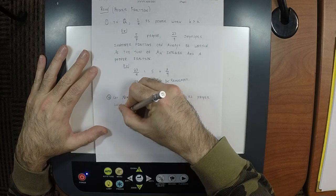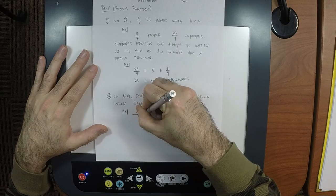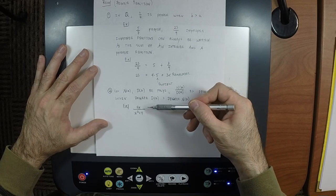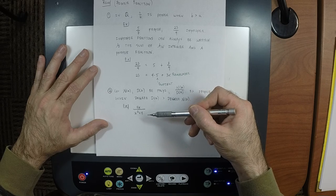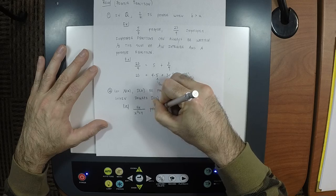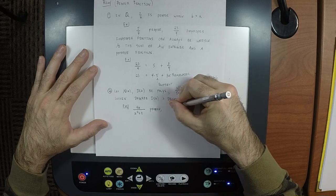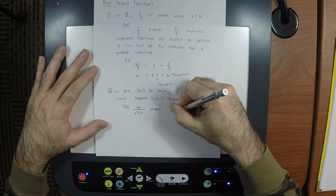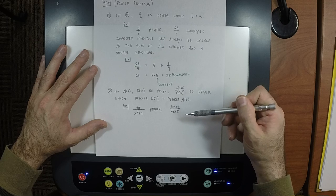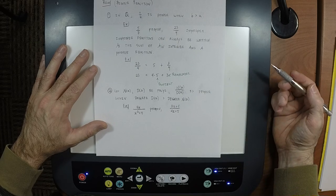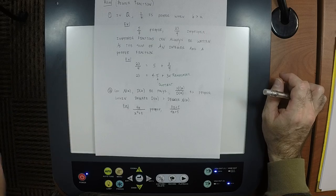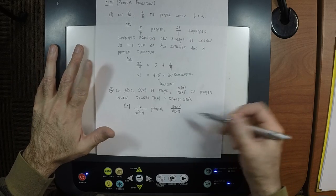For example, how about 4x divided by x squared plus 1? The degree of the numerator is 1, and the degree of the denominator is 2. So this is proper. How about (3x + 1) over (4x + 5)? The degree of the numerator is 1 and the denominator is also 1. It is not proper, because to be proper the degree of the denominator has to be strictly greater. Is 1 more than 1? No. So this is improper.